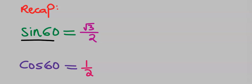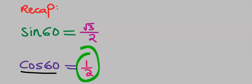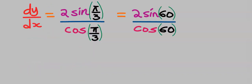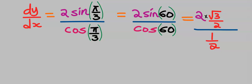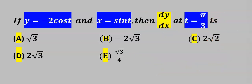From the standard trig values: sin(60°) = √3/2 and cos(60°) = 1/2. The 2 is multiplying, so it cancels with the denominator. Therefore dy/dx = 2 × (√3/2) × (1/2) = √3/2... simplifying gives our answer. From the options, our answer is D.